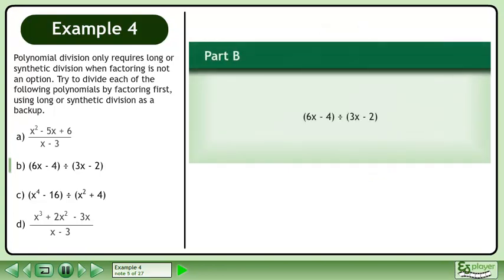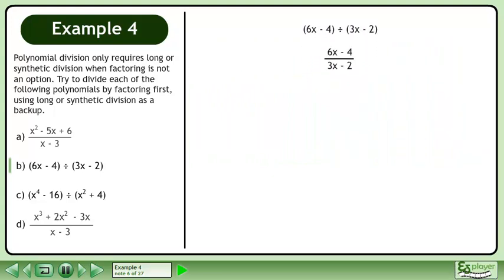Now we'll move on to part b. Divide 6x-4 by 3x-2. We write the division as a fraction. Factor out 2 from the numerator to get 2(3x-2) over 3x-2. Cancel out 3x-2 from the numerator and denominator. The result of the division is 2. We have the restriction that x cannot equal 2/3 since we divided by 3x-2.